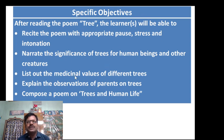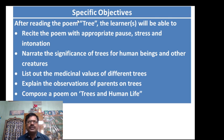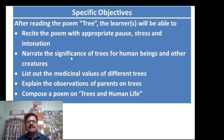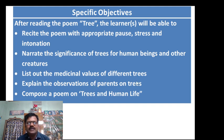Next, we will discuss specific objectives. Specific objectives should follow the SMART model — they should be Specific, Measurable, Achievable, Result-oriented, and Time-boxed. For the poem 'Trees,' after reading the poem, learners will be able to: recite the poem with appropriate pause, stress, and intonation; narrate the significance of trees for human beings and other creatures; list out the medicinal values of different trees; and explain the observations of parents on trees.